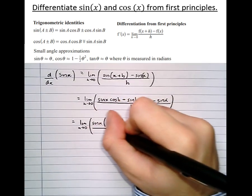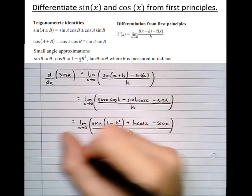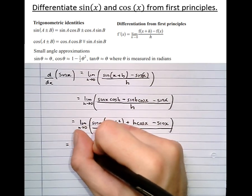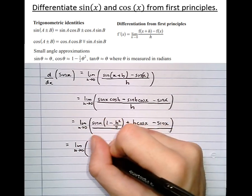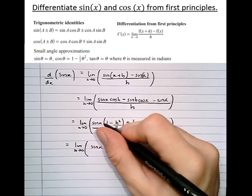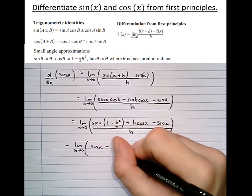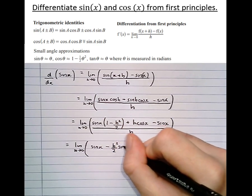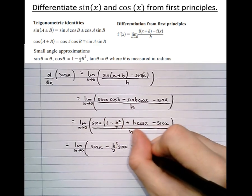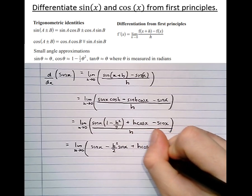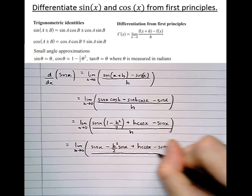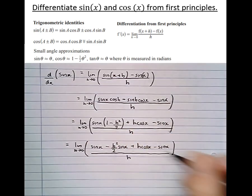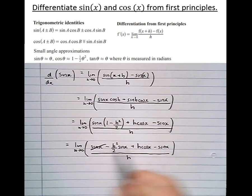That's all divided by h, equals the limit as h approaches 0 of, let's expand this bracket now. So sin x times 1 is sin x, sin x times minus h squared over 2 is minus h squared over 2 sin x, plus h cos x, minus sin x, all over h.